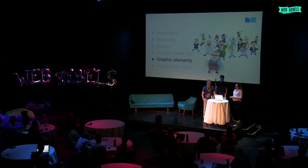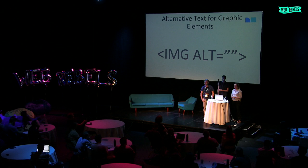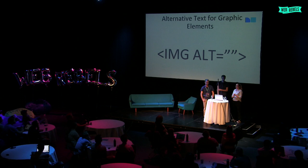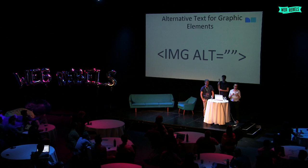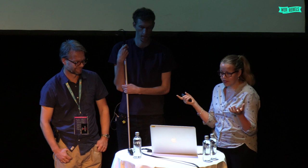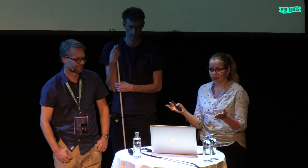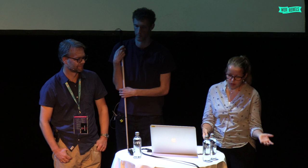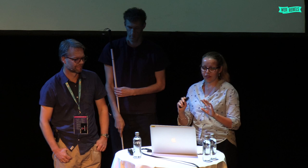For alternative text on graphic elements, the rule of thumb is you should always have an alt attribute. If you leave it out, screen readers will try to find the filename, which could be a long number — boring to listen to. However, if you have a decoration image, it's not important to read it out, so you still include the alt tag but leave it empty. If you leave it empty, the screen reader understands it doesn't need to read it.